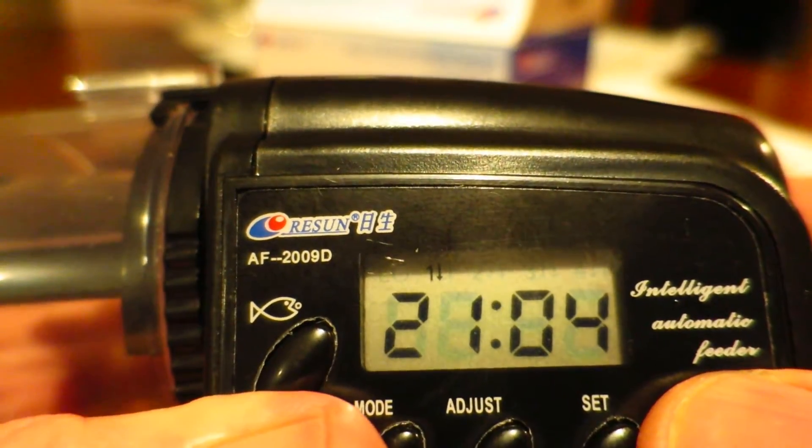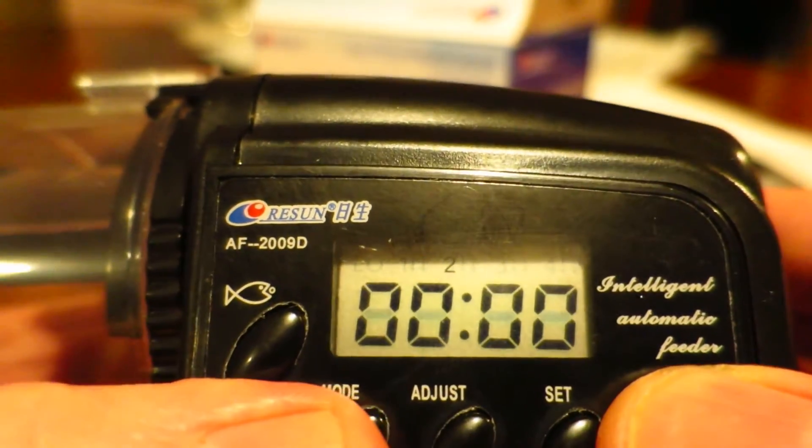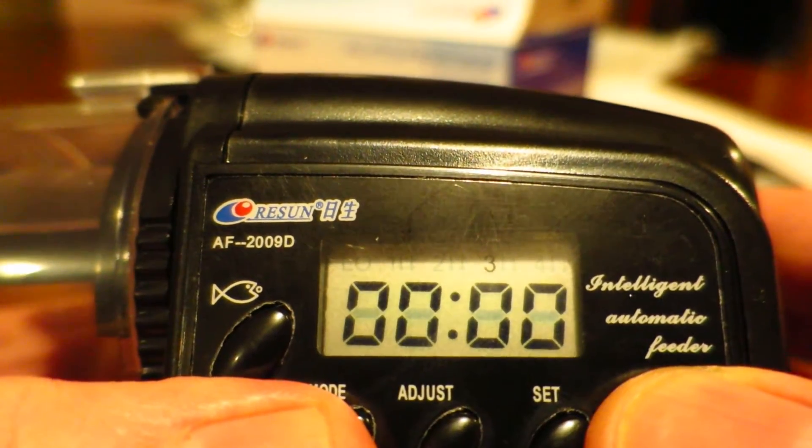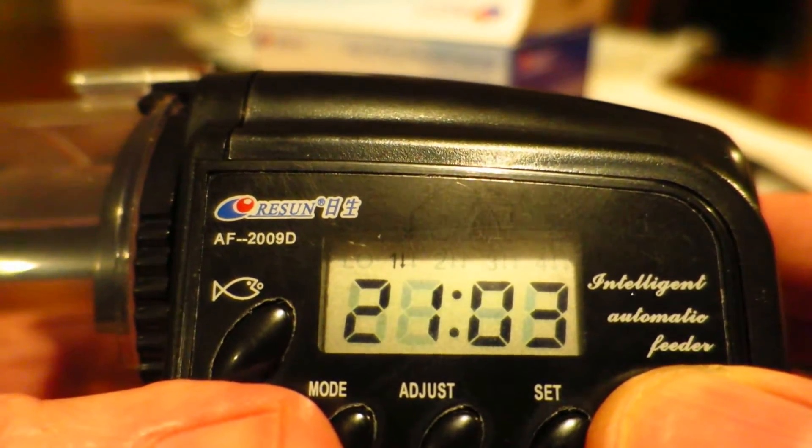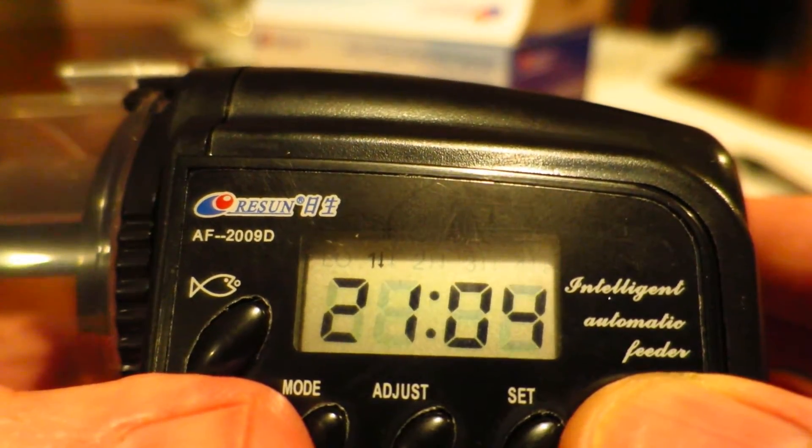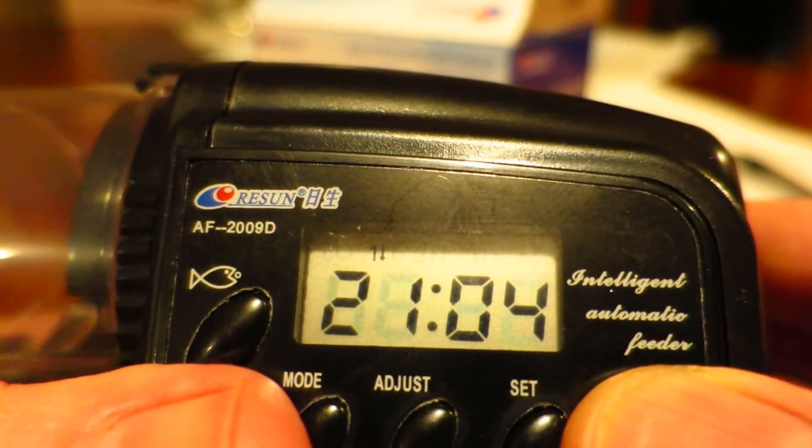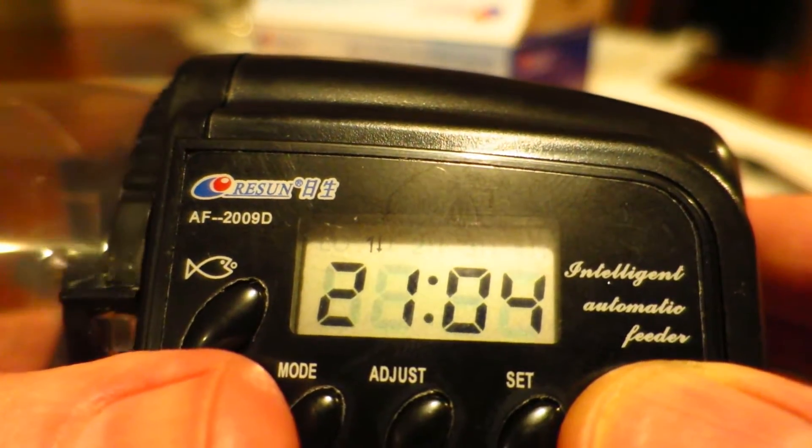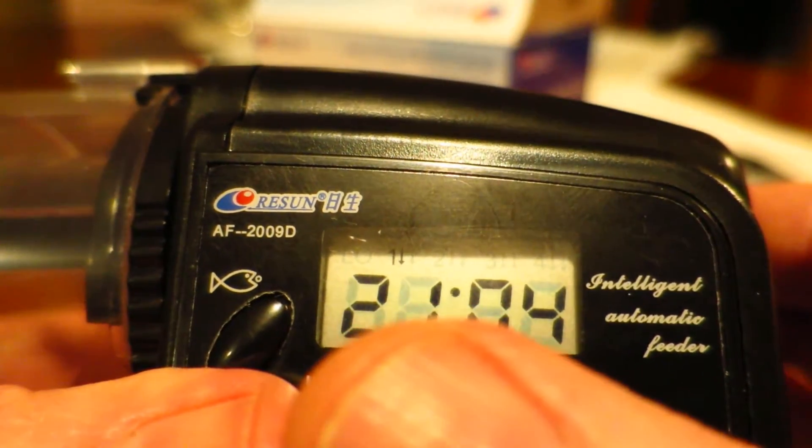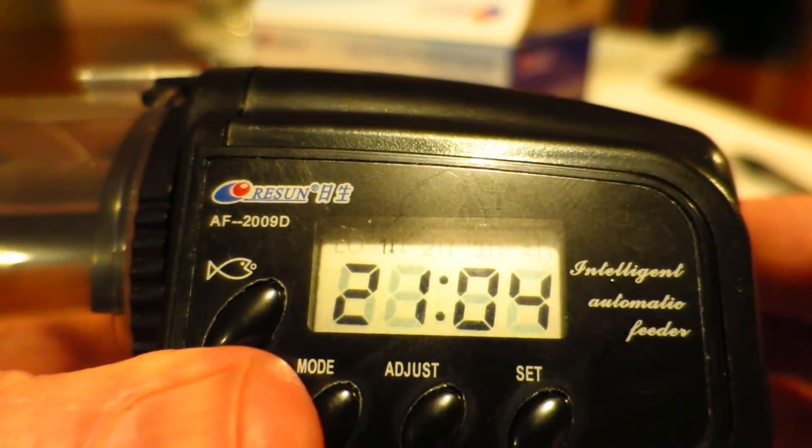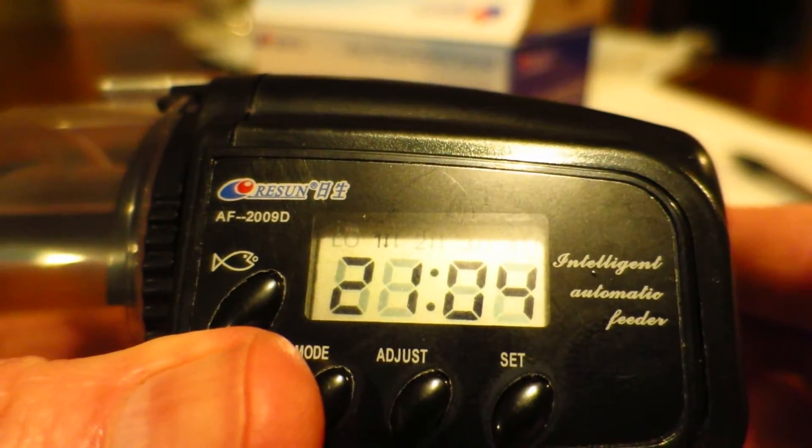So now we've got timer one set for 21:04. So if I press mode, timer two isn't set, three is not set, no arrows, four no arrows, and then back to the beginning, we can see that the current time is 21:03 with the colon flashing. And there you go, it just operated at 21:04. And because there's only a single one with the arrow down, we know that we only have one timer set, and so that's pretty much it, how to set it.